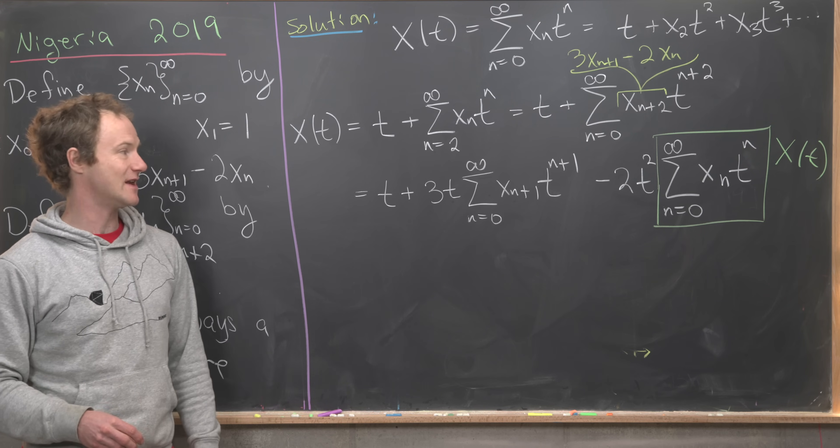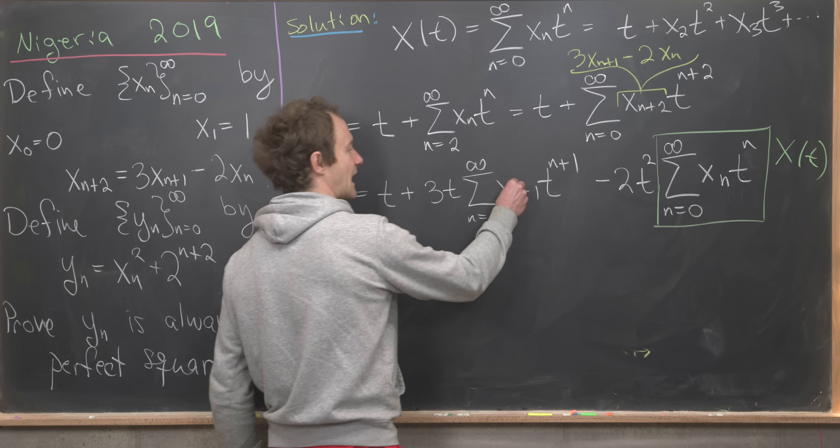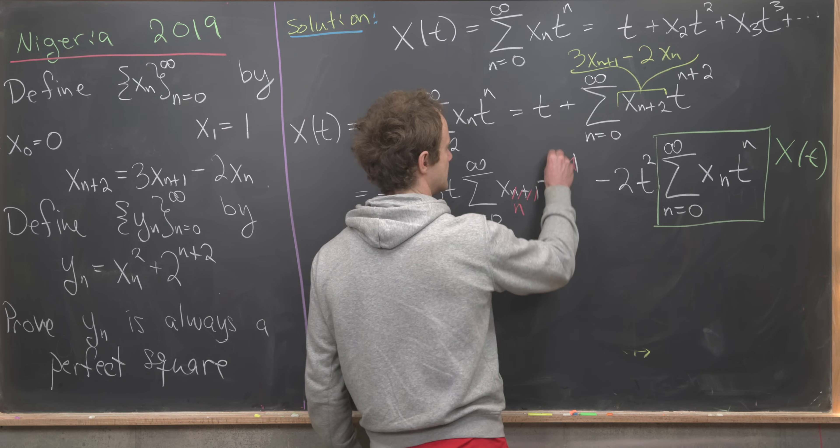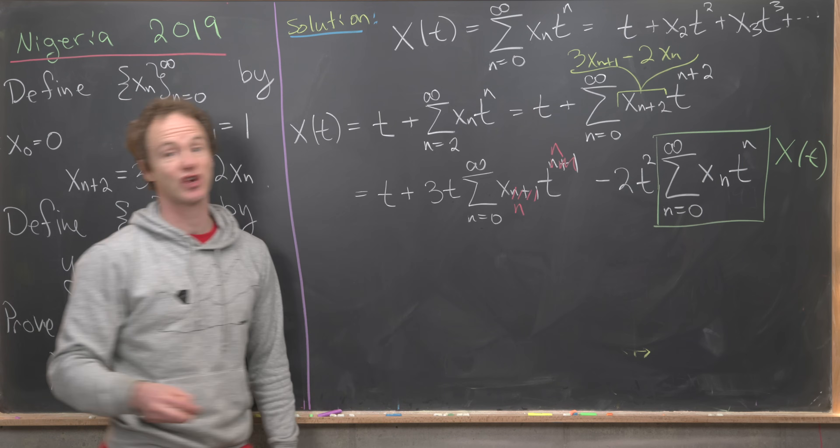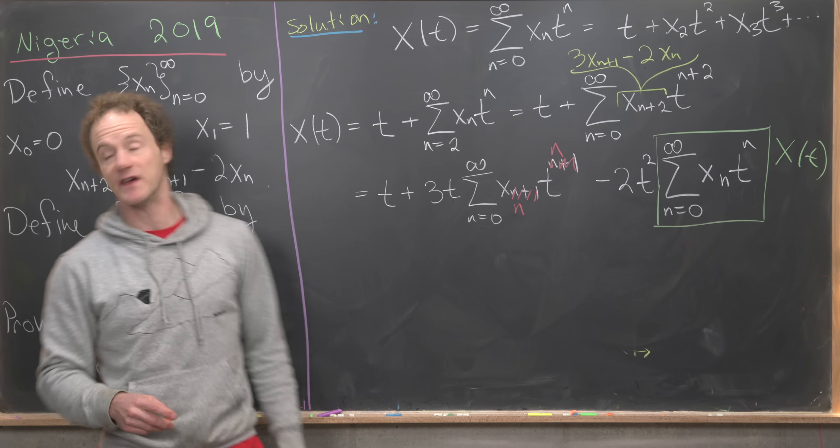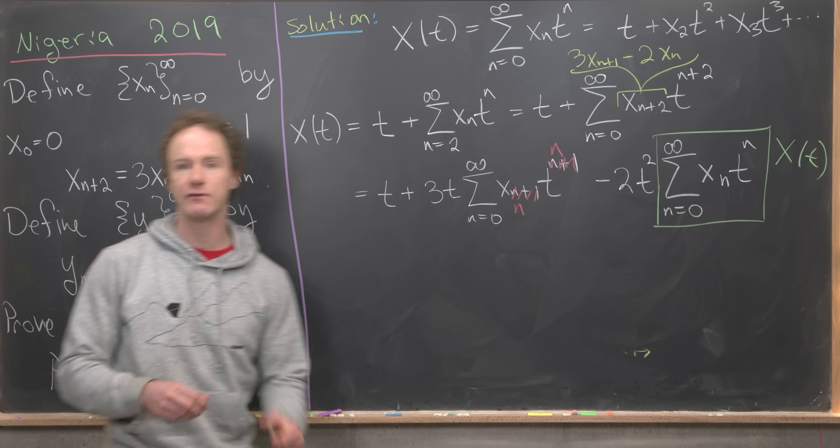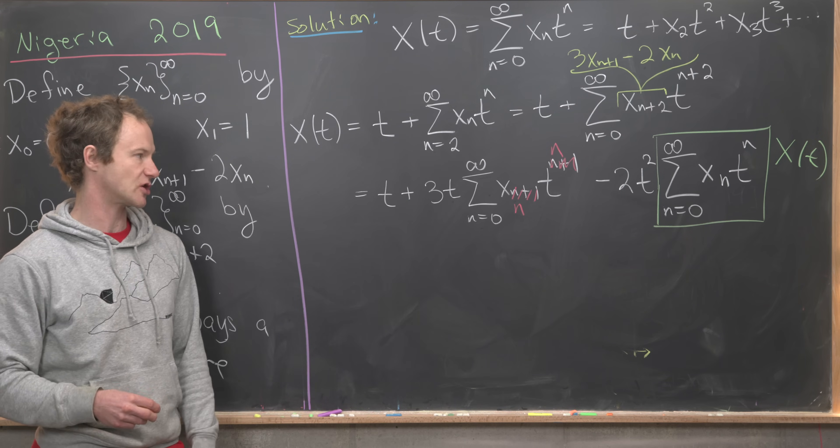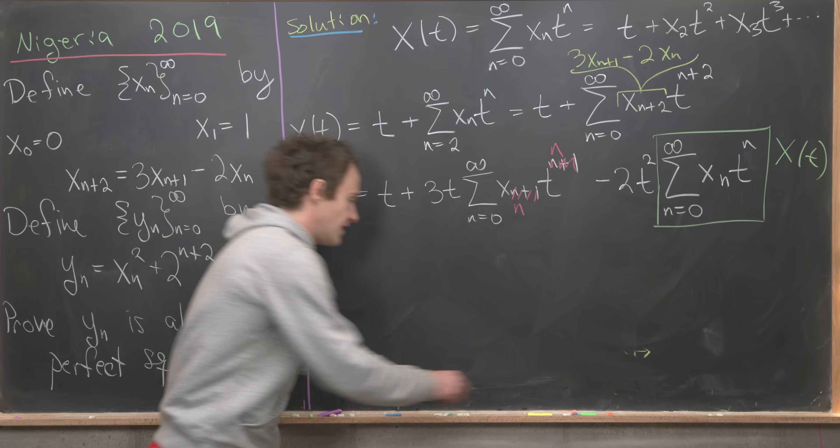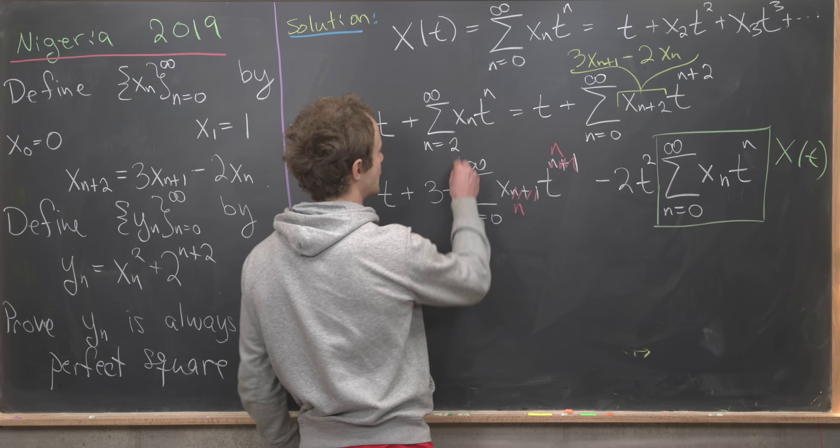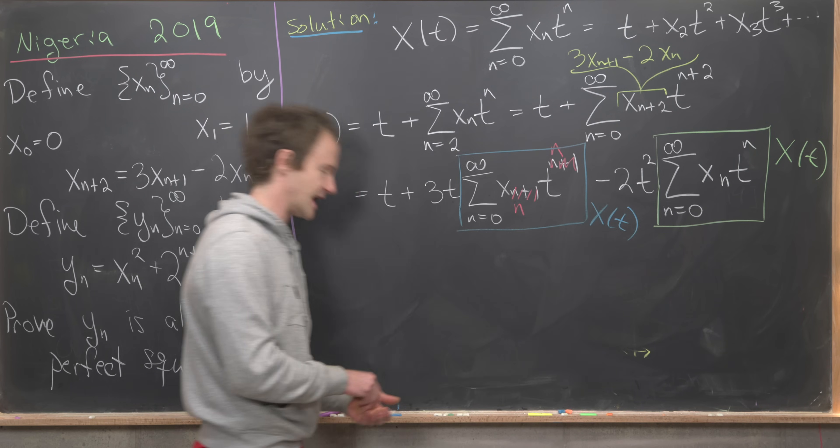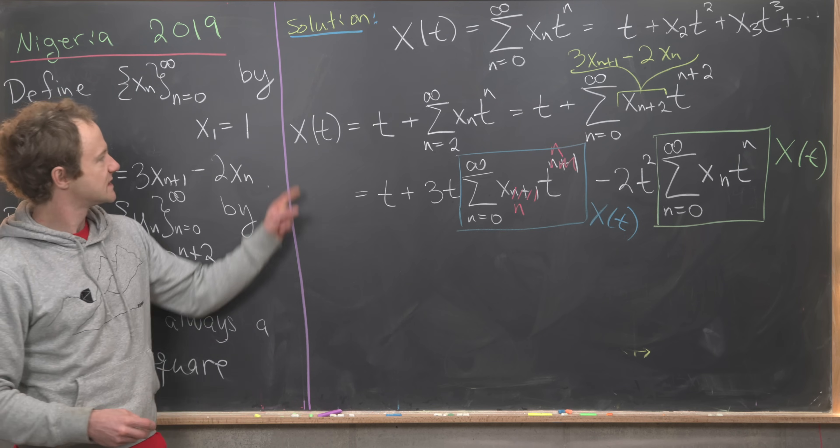First we'll replace n with n minus 1. That'll change all of these n plus 1 to n. But that'll change my starting point from 0 to 1. But luckily the 0th term is equal to 0 so I can just add that starting term back in and that means I don't have to change this at all. Then I can see that what's left over here is another copy of our generating function X of t.